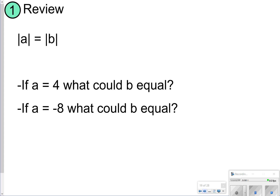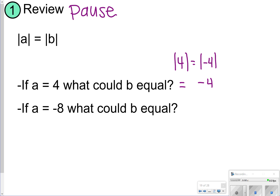The first thing we want to make sure is: if A equals 4, what could B be equal to? And if A equals negative 8, what could B be equal to? Go ahead and take time now to review this. If A is equal to 4, B could also be equal to negative 4, because the absolute value of 4 is equal to the absolute value of negative 4. B could also be 4. If A is negative 8, B could also be positive 8, because the absolute value of negative 8 is equal to the absolute value of 8.